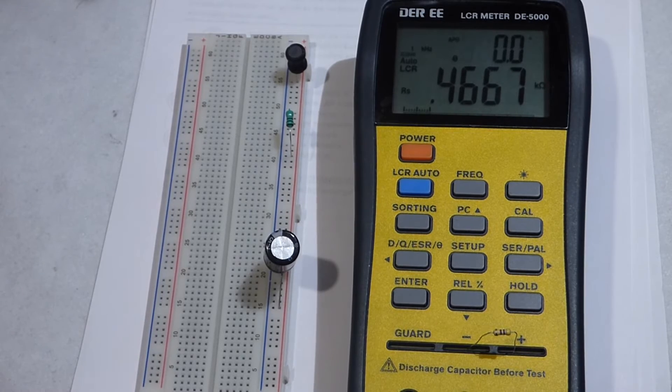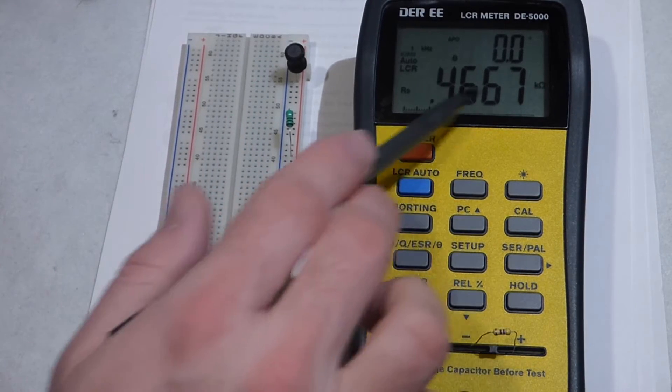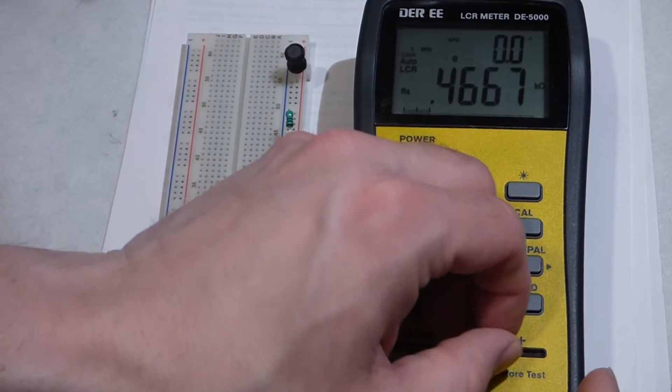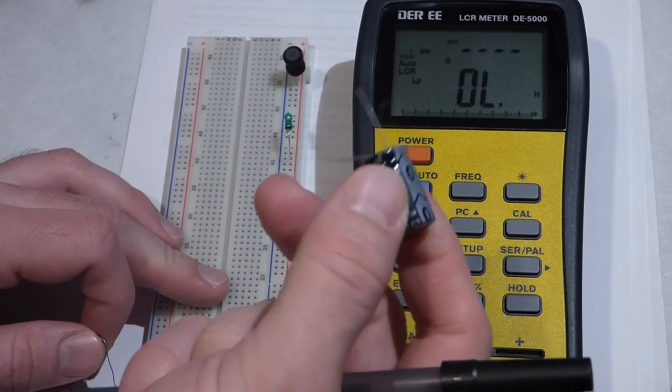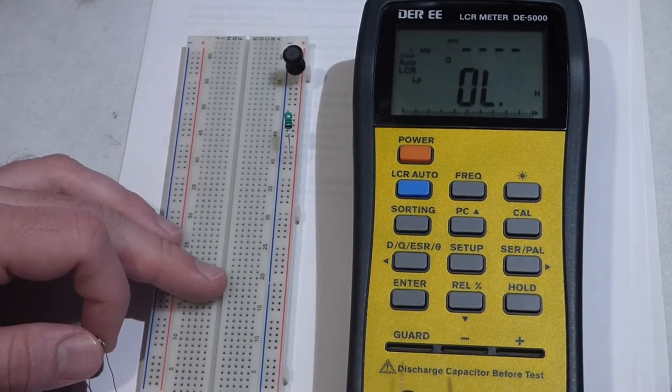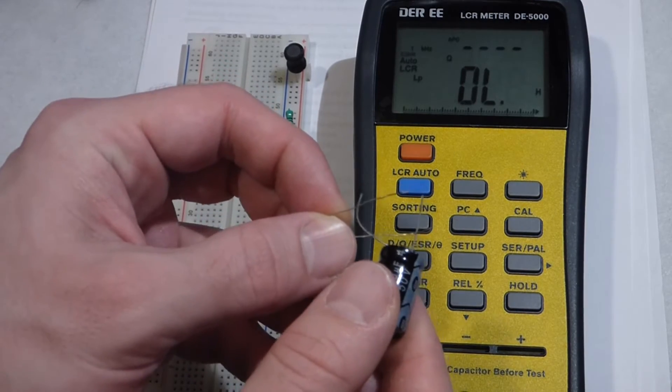Instead of measuring the inductance, now it's measuring the resistance - that's the auto part. Now we come to the capacitor. As it says here, discharge capacitor before test, so we can do that just by putting a piece of metal across them.